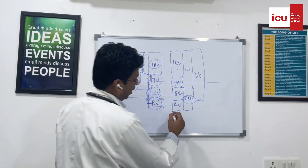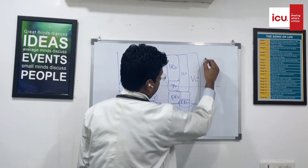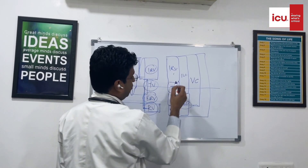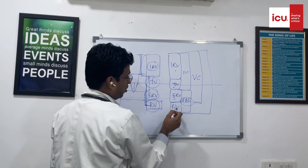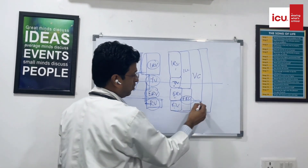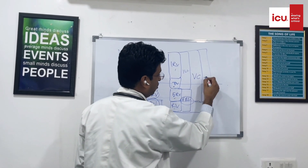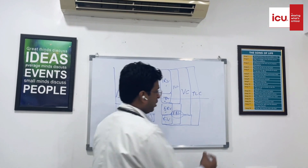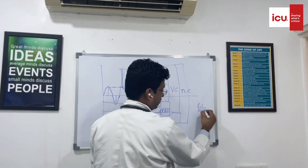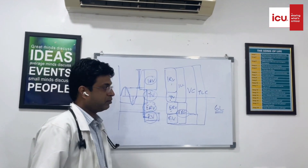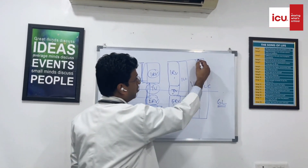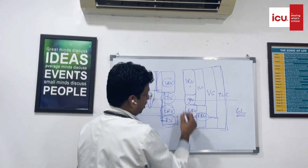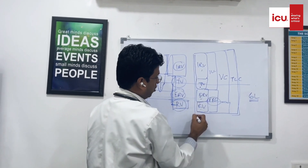And if I combine all four — inspiratory reserve volume, tidal volume, expiratory reserve volume, and residual volume — this is your total lung capacity. In a normal patient, total lung capacity is 6 litres.